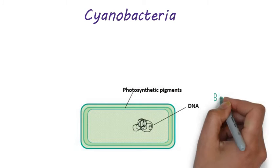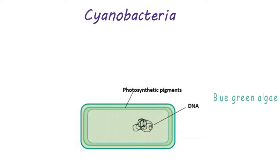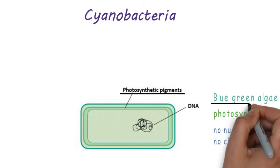Cyanobacteria are microscopic unicellular blue-green algae. They are the simplest photosynthetic organisms known. They have no nucleus or chloroplast. The photosynthetic pigments reside in their cell membrane. These pigments give them their characteristic blue-green color.